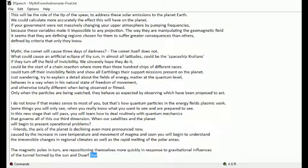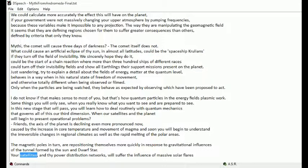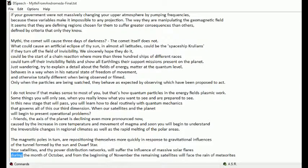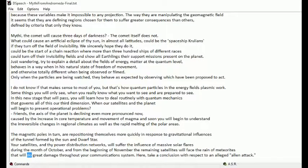Your satellites and thy power distribution networks will suffer the influence of massive solar flares during the month of October. And from the beginning of November, the remaining satellites will face the rain of meteorites that will do great damage throughout your communications system. Here, take a conclusion with respect to an alleged alien attack.